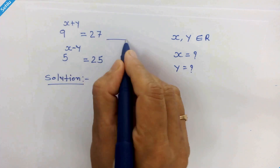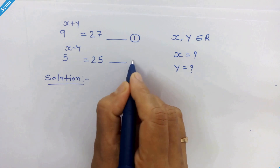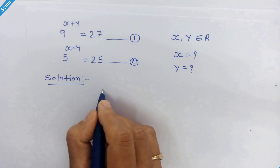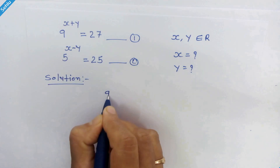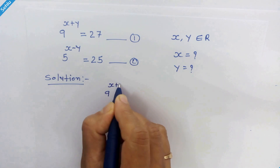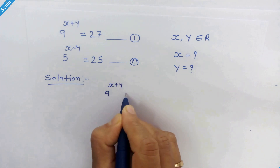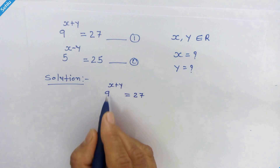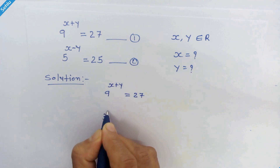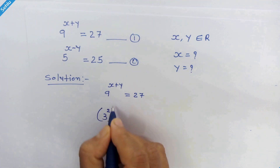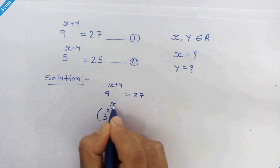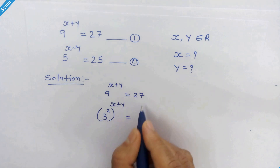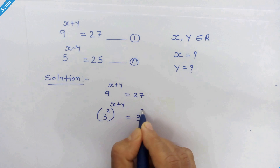Let's call this equation 1 and this equation 2. We will start with equation 1, which is 9 raised to x plus y is equal to 27. We know that 9 is 3 squared, so we can write it as 3 squared, whole raised to x plus y, is equal to 27, which is 3 cubed.